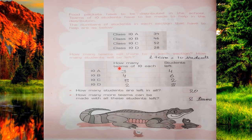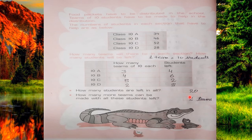The next question is: how many students are left in all? You have to count the total left students: 4 plus 6 plus 2 plus 8. So 4 plus 6 is 10, 10 plus 2 is 12, and 12 plus 8 is 20. The total number of students left is 20. And from 20 leftover students, you can make 2 more teams.